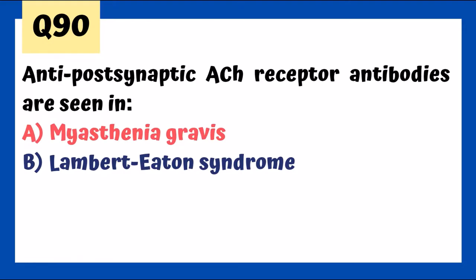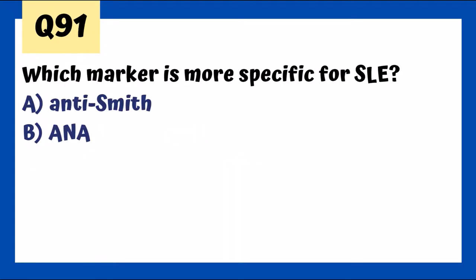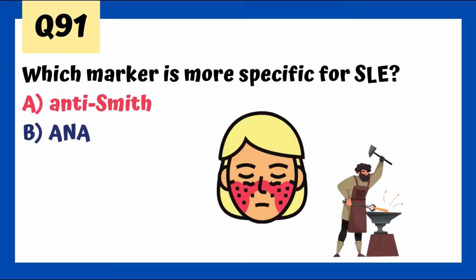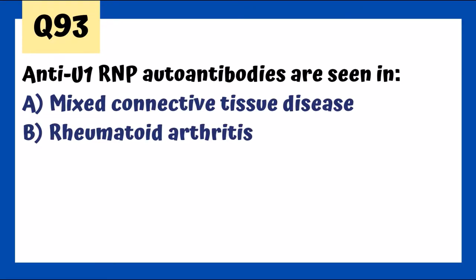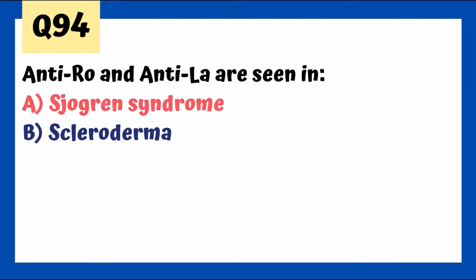Anti-Smith antibody is more specific for SLE than ANA, even though ANA is also a marker for SLE. Anti-histone antibodies are seen in drug-induced lupus, not SLE. Anti-double-stranded DNA is also looked for in SLE. Anti-U1-RNP antibodies are seen in mixed connective tissue disease. Anti-Ro and anti-La (anti-SSA and anti-SSB) are seen in Sjögren's syndrome — SS standing for Sjögren's syndrome.